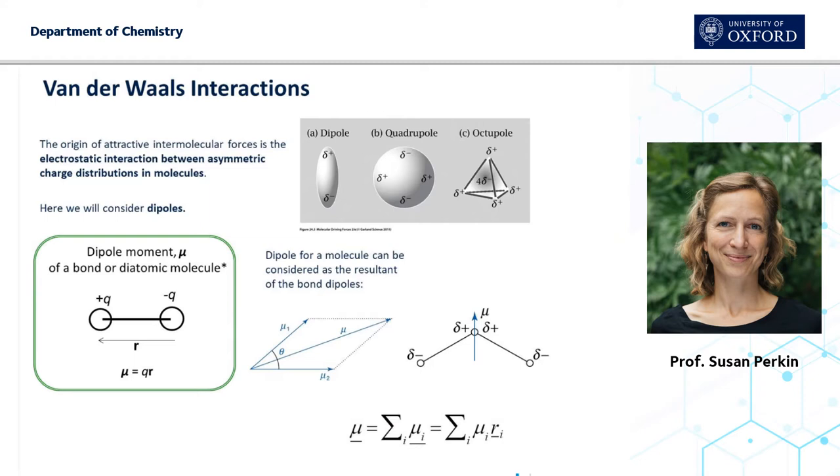The principal origin of these molecular interactions we're considering in this course are the van der Waals interactions. The origin of these attractive intermolecular forces is in every case the electrostatic interaction between asymmetric charge distributions in molecules. Those asymmetric charge distributions can arise from various structures and processes. Asymmetric charge distributions could be of many different varieties. A dipole is the simplest asymmetry. We could move to higher order—there is a quadrupole, octopole, and so on—but in this lecture we are considering only dipoles.